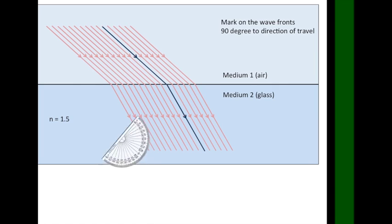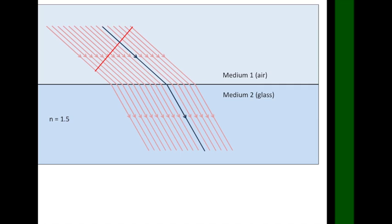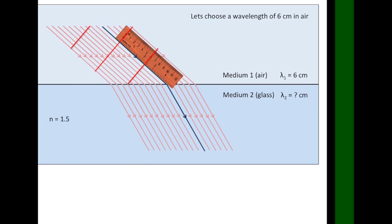Next, mark on a wavefront in a random location. Wavefronts are always 90 degrees to the direction the waves are moving. I'm going to choose light with a wavelength of 6 cm, as that turns out to be convenient. But again, any value would work just fine.